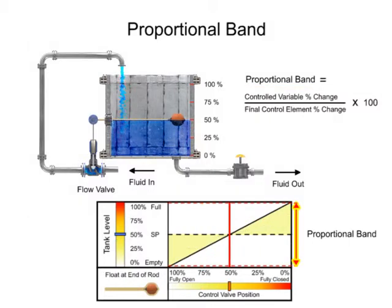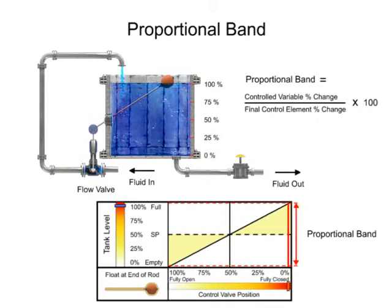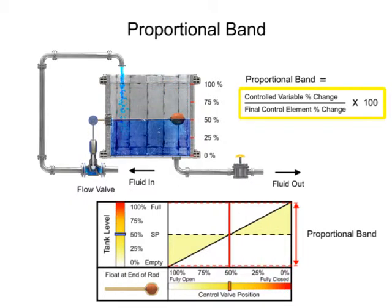The width of proportional band determines how much of a controlled variable change is required to cause the final control element to move by a determined amount. By placing the float on the end of the rod, the fluid level has to change 100% to cause the final control element to change 100%.